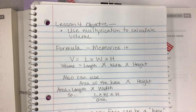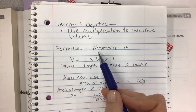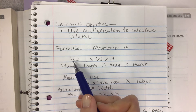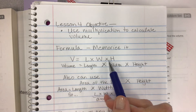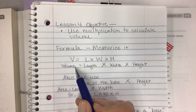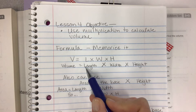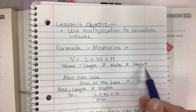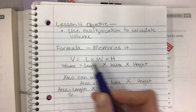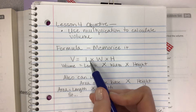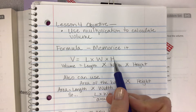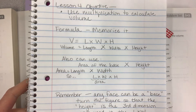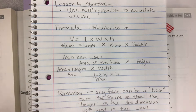It's quite simple. Once you memorize this formula — the formula for volume is V equals L times W times H. That stands for: volume equals length multiplied by width multiplied by height. You'll typically just see it written as V for volume, L for length, W for width, and H for height.